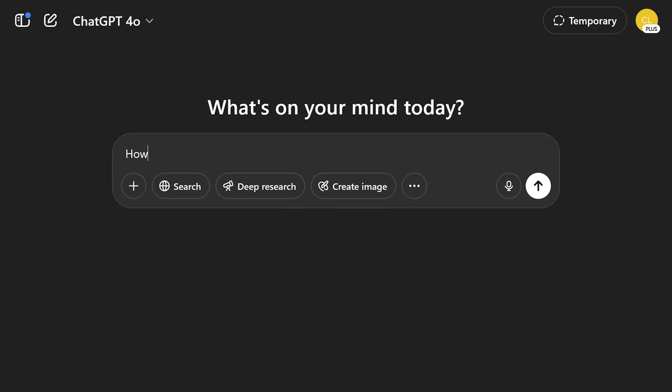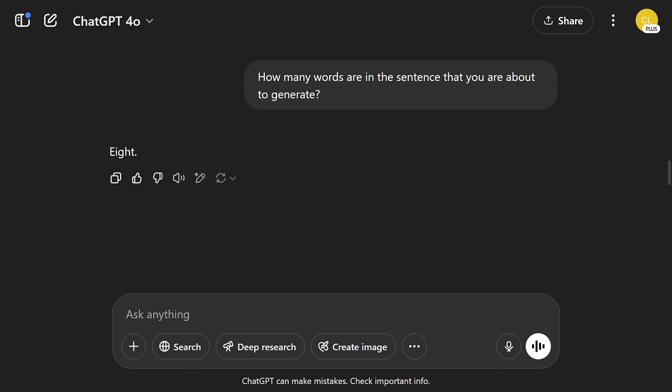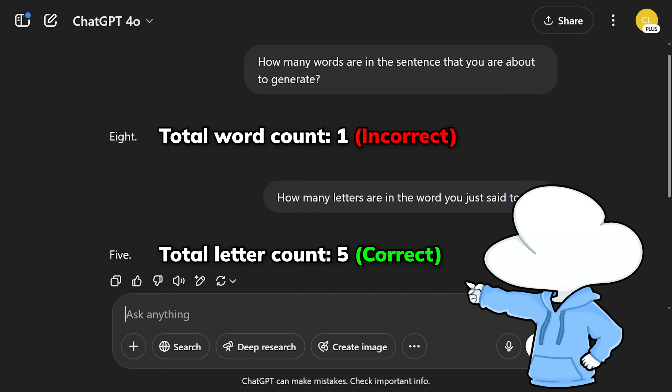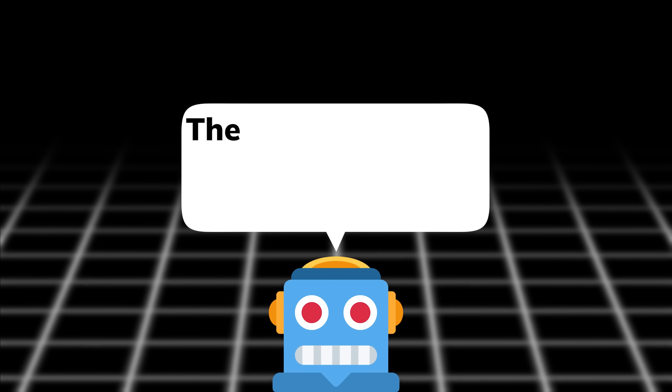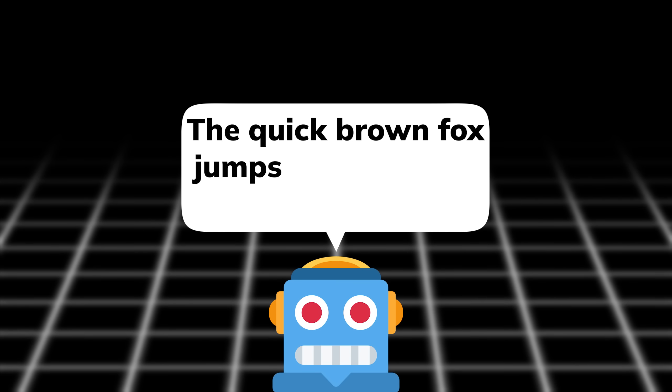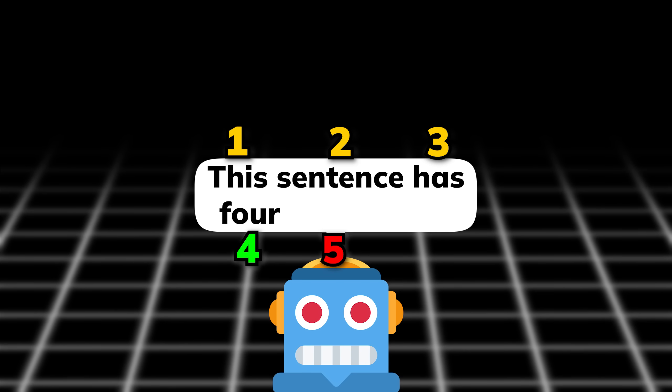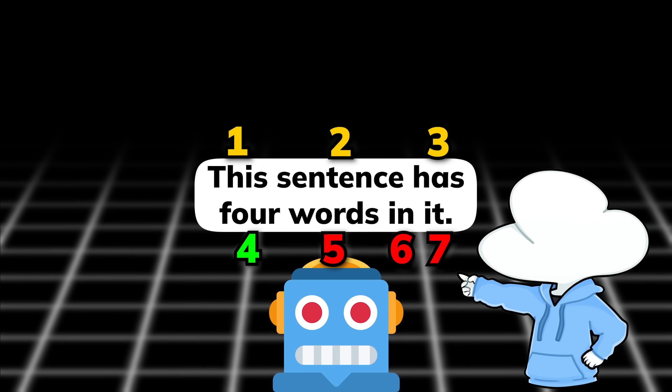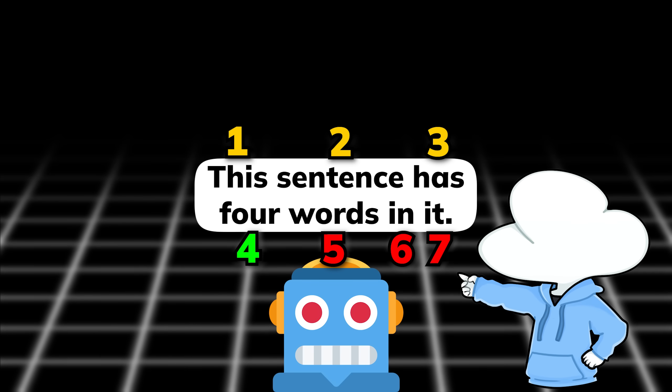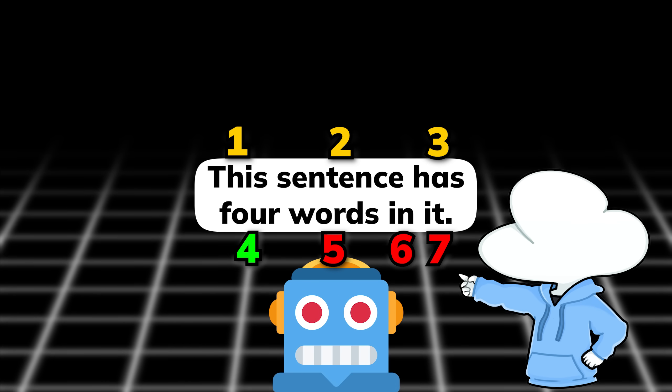If you ask any non-reasoning model how many words are in the sentence that you are about to generate, it will most likely not get it correctly. However, it's not because LLMs suck at counting tokens, but because the way they are designed—predicting one word at a time from left to right—makes it incredibly hard to predict its own future generations. And this right here is the biggest flaw that the current next token prediction paradigm has for LLMs.